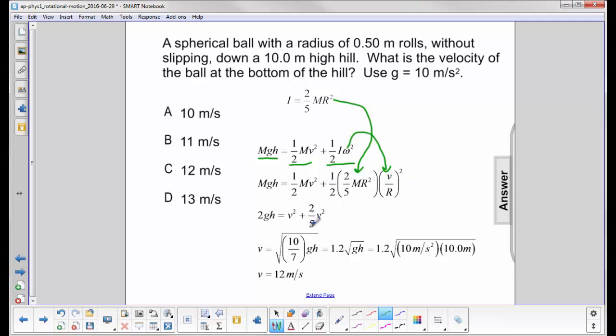I then add the two of them together. I do a little algebra. And I find out that V is equal to square root of 10 over 7 times gh. And if you want, just pause here a second and check how I got from here to here.